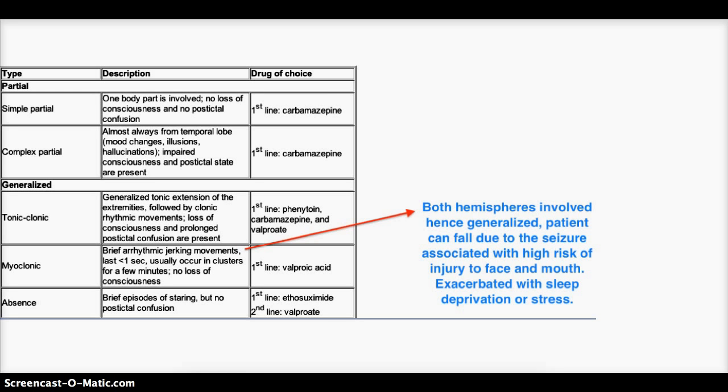And the last one in the category is the absence seizure, where there are brief episodes of staring. The child might be just staring. Usually, the absence seizure is prevalent in children. They might be sitting in the class and staring with maybe blinking present. There is no post-ictal confusion as well. First line is ethosuximide, whereas second line is valproic acid.